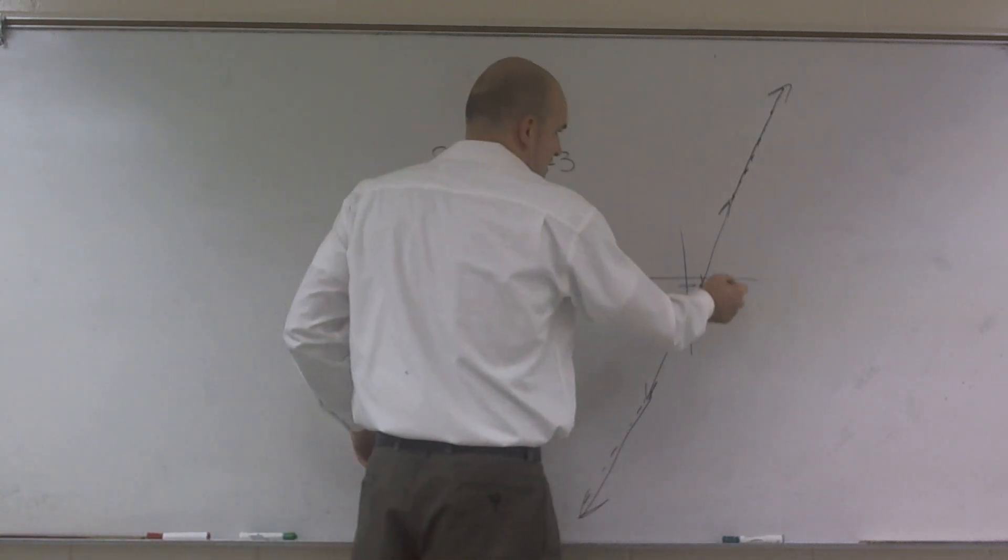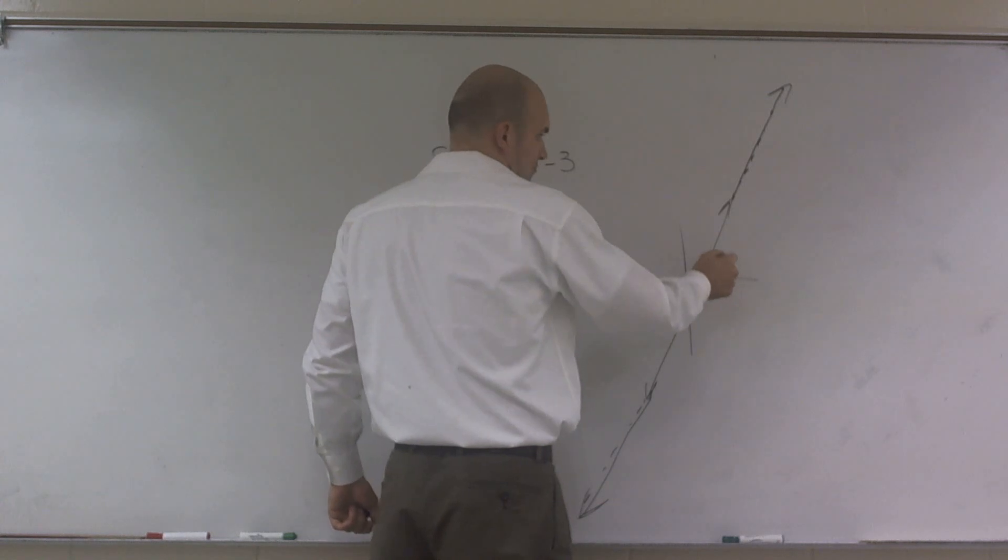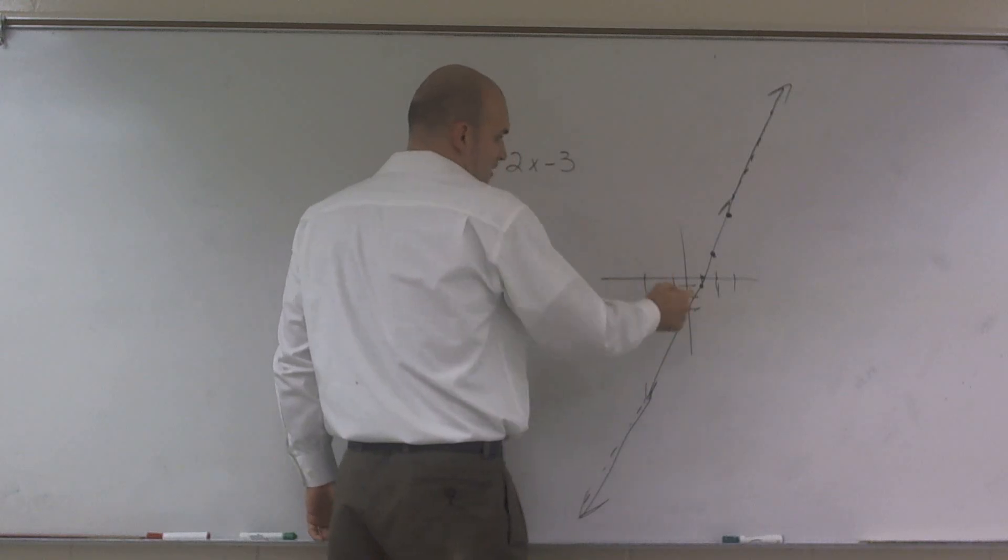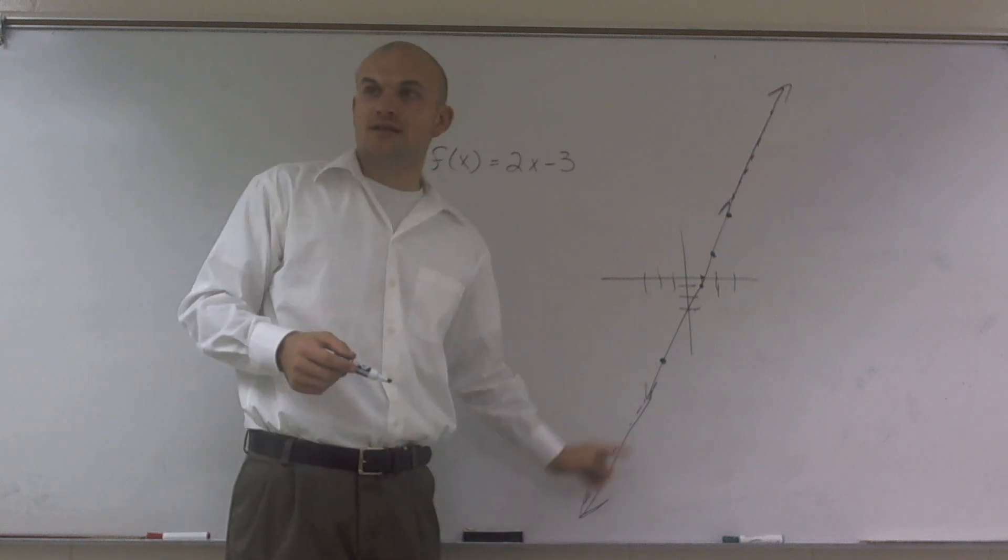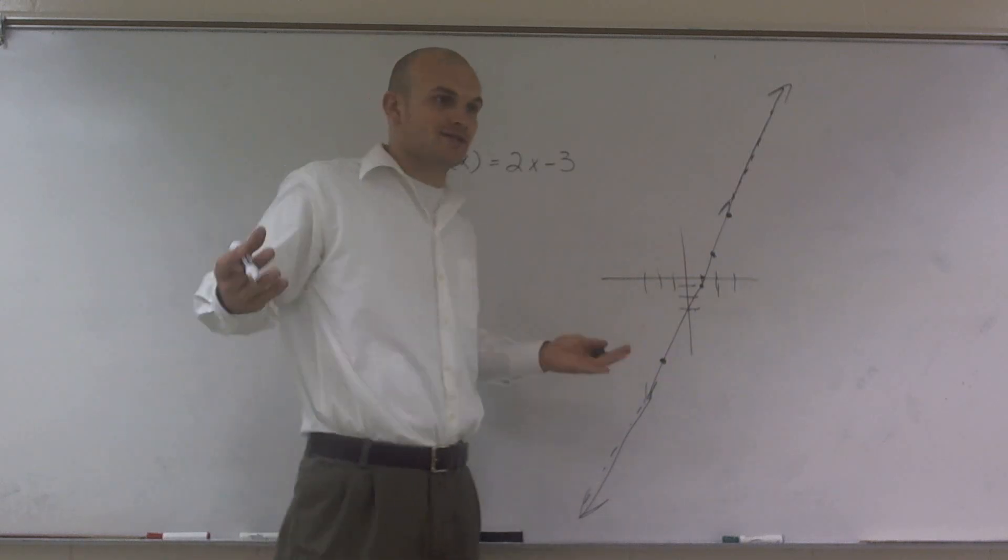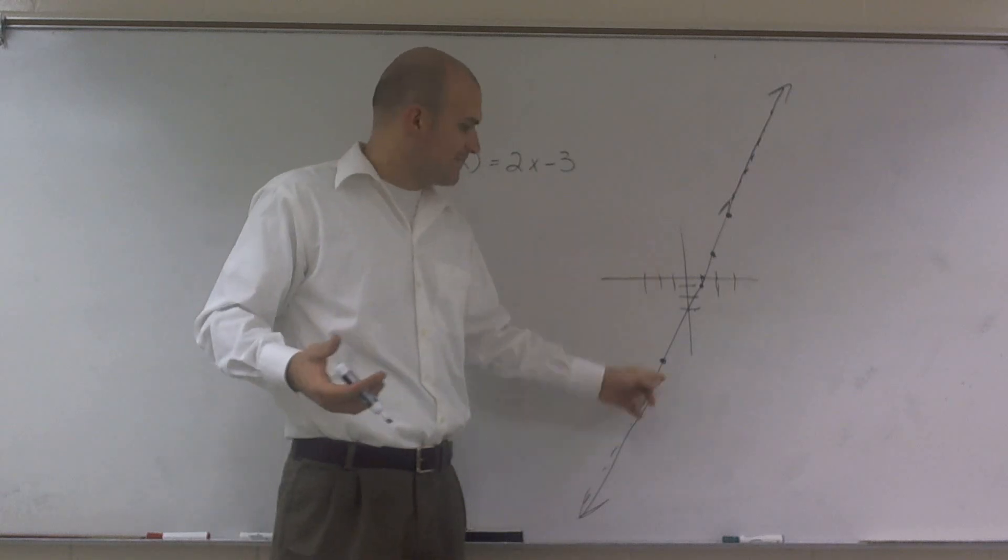So therefore, you could say that every x value, when x equals 1, there's a value. When x equals 2, I have a value. When x equals 3, I have a value. When x equals negative 1, 2, 3, I have a value. Again, for all of my values of x, there is a point on my function that has a y value. So I have a, for every input, which is my x, I have an output.